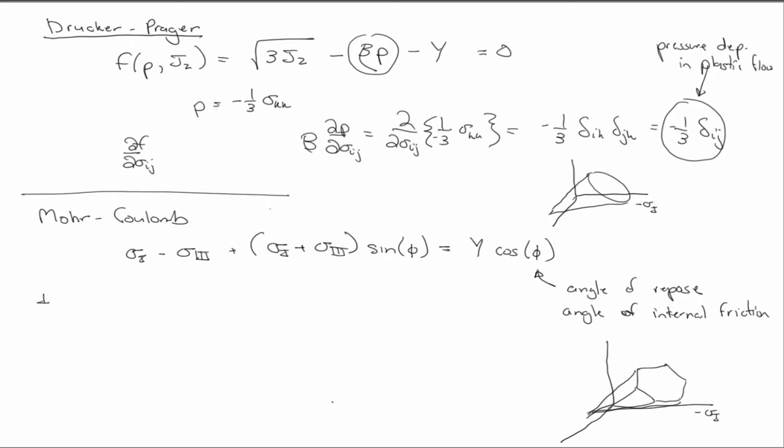We can write this guy in terms of invariance as well. And typically, what you'll see is something like this: one-third I1, so I is the first invariant of the stress tensor, not the deviatoric stress tensor, but the full stress tensor, times the sine of phi plus square root of j2 times the cosine of theta minus 1 over the square root of 3 sine theta sine phi equals Y over 2 cosine phi.